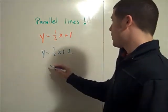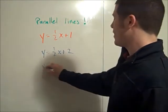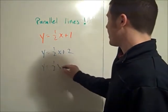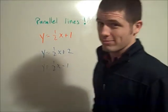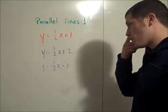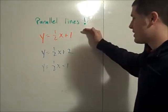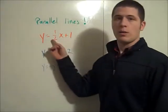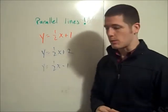Or if you want to get crazy, y equals 1/2x minus 1. So all we did there is we changed the y-intercept. Parallel lines have to have the same slope. In fact all three of these lines here are parallel because all three lines have the same slope.